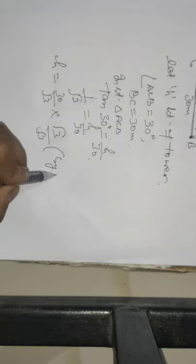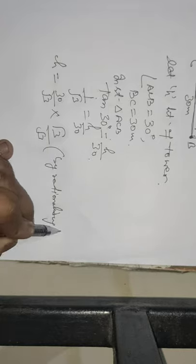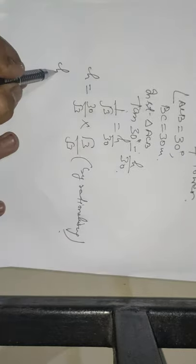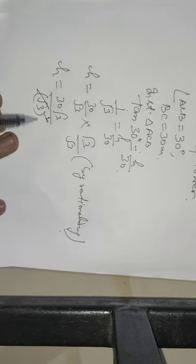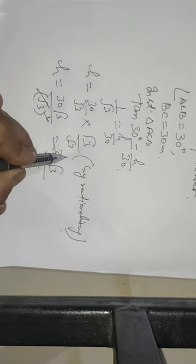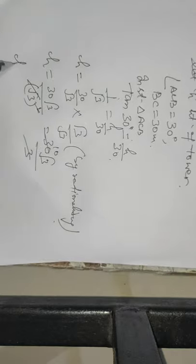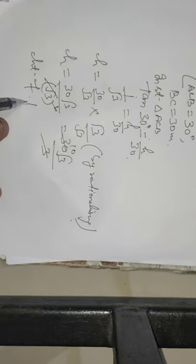H equals 30 upon root 3. By rationalizing, H equals 30 root 3 by 3. So the height of the tower equals 10 root 3.